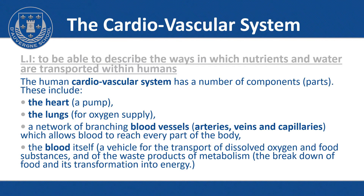The human cardiovascular system has a number of components. These include the heart, which is the pump, the lungs for oxygen supply, and a network of branching blood vessels — arteries, veins and capillaries — which allow blood to reach every part of the body. The blood itself is a vehicle for the transport of dissolved oxygen, food substances, and the waste products of metabolism. Another word for metabolism is the breakdown of food and its transformation into energy.